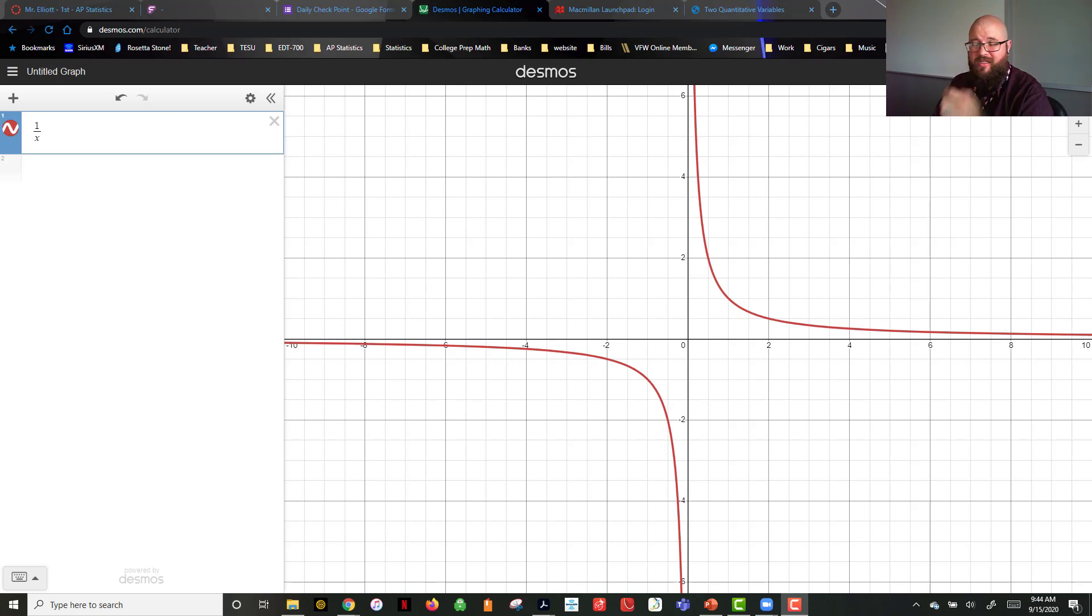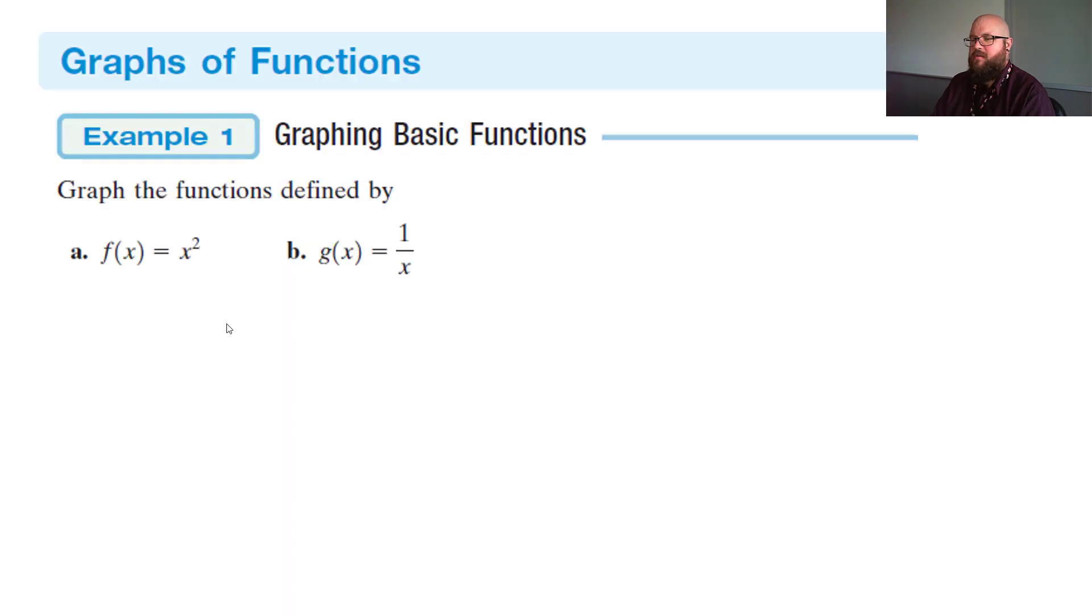So the asymptote looks like it's going to be at y = 0 and at x = 0. So we need to make sure we get enough points here to draw this out. So since we had g(x) = 1/x, let's make a table.